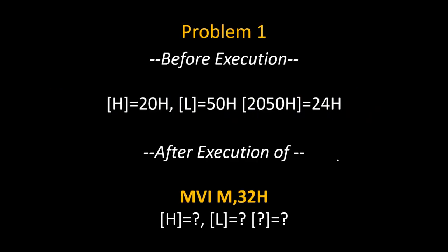Here are two practice problems. In the first problem, before execution, H is 20H and L is 50H, so on memory address 2050H, data 24H was there, and we execute instruction MVI M, 32H. Find the new value of H, L, and that particular memory.